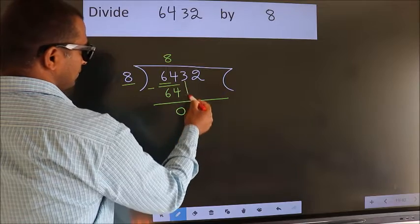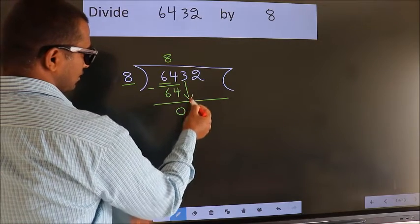After this, bring down the beside number. So, 3 down.